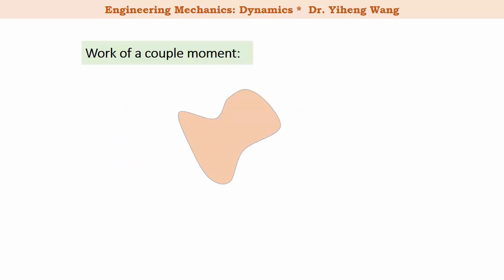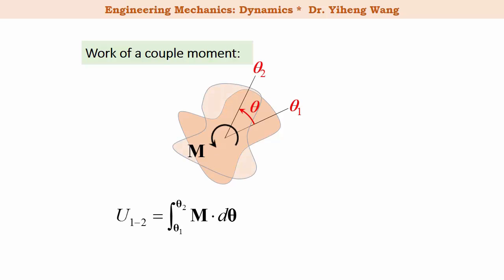If the rigid body is subjected to a couple moment and it rotates within the plane by angle theta, then the work done by this couple moment is defined as the integration of the dot product of the moment vector and dθ, the differential angular position vector. For planar motion, the moment vector and the angular position vector are both perpendicular to the plane, therefore they are either of the same direction or opposite direction, and this vector equation can be simplified to a scalar equation.